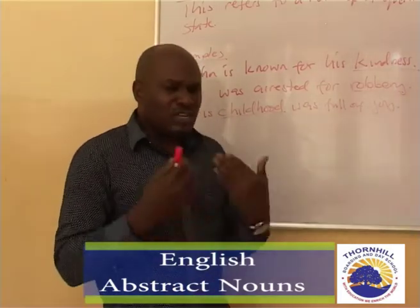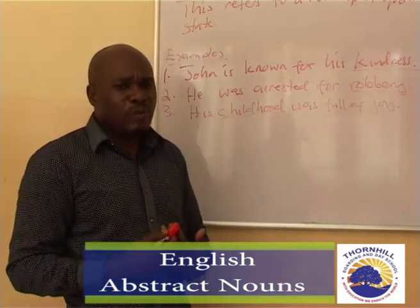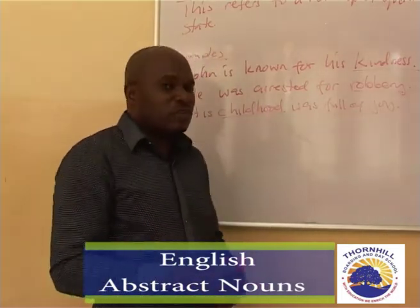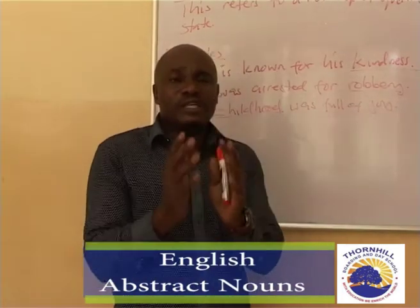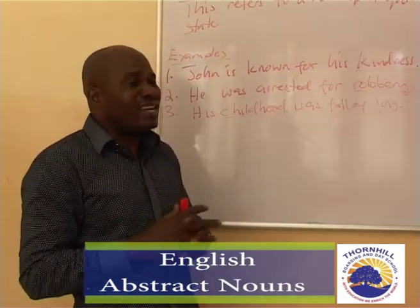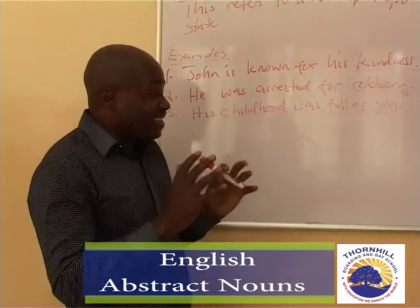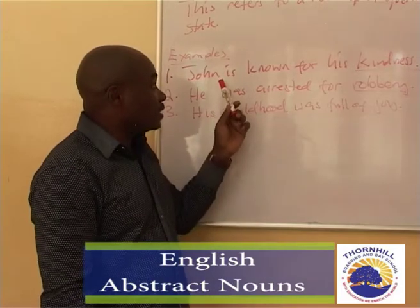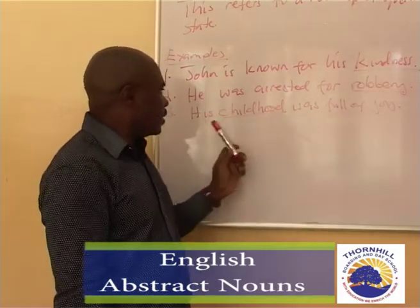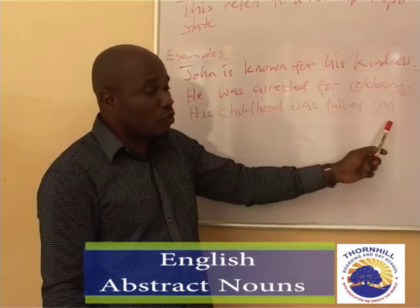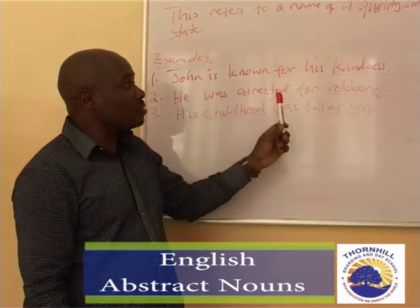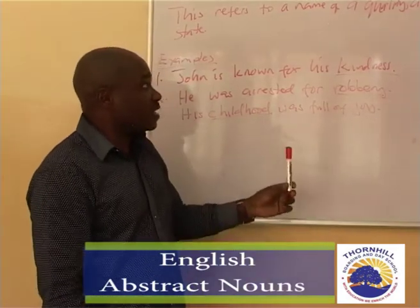So very quickly, what have we looked at today? We began by defining what an abstract noun is: a name of a quality, a name of an action, or a name of a state. To make that clearer, we looked at three examples — John is known for his kindness; he was arrested for robbery; his childhood was full of joy. The words kindness, robbery, and childhood are all abstract nouns, but they depict different aspects of an abstract noun.